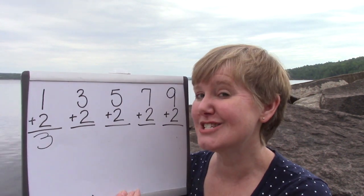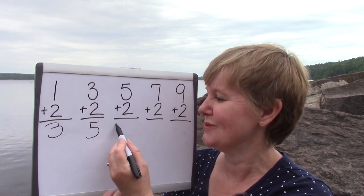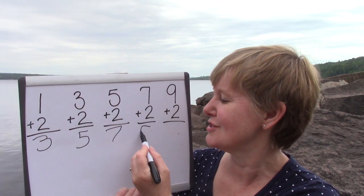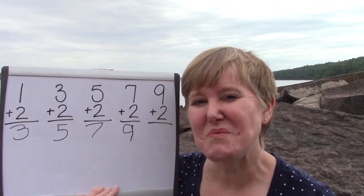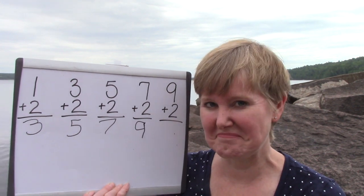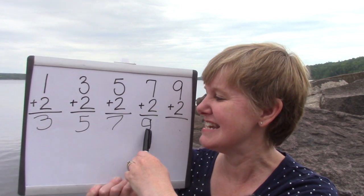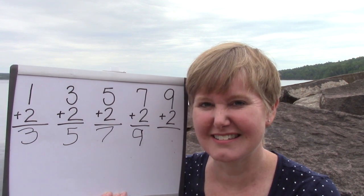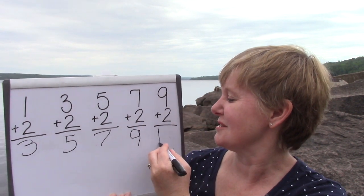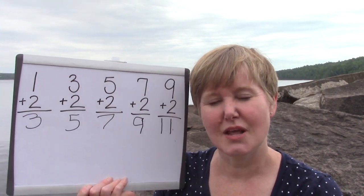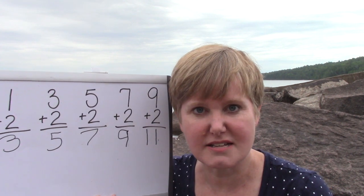One plus two is three. Three plus two is five. Five plus two is seven. Seven plus two is nine. What are you noticing about all of our answers? They're always the next odd number: three, five, seven, nine. What would the next odd number be? Put it in your head and see if you're right — nine plus two is eleven. Whenever we add two to an odd number, the answer is always the very next odd number.